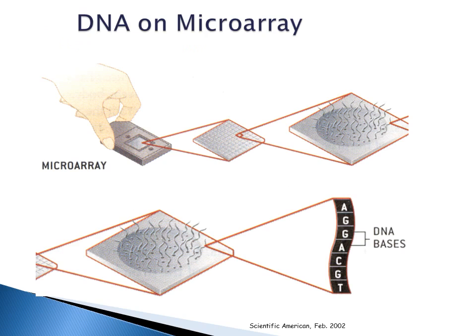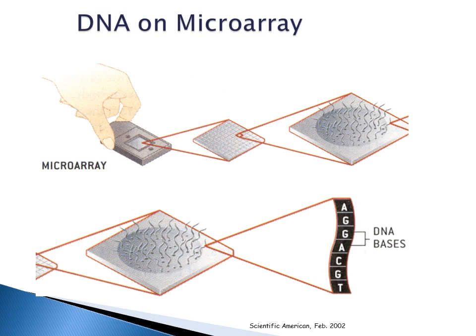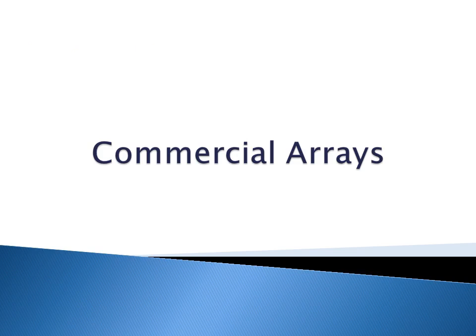Here's an example of DNA on a microarray — you can see the chip placed in a case, with different regions each containing many, many spots of nucleic acid. There's an animation that gives a good example of the type of experiment you can run using a microarray. This particular animation uses yeast cells, but you can design an array for any type of cells — eukaryotic, microbial, or others.